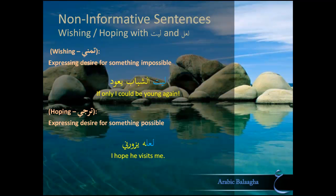Today we focus on wishes. In Arabic, this is called Tamanni. Tamanni is where you express desire for something either impossible or at least extremely unlikely. The most common word for this in Arabic is Laita. For example, you would say 'Laita al-shabaaba ya'ud' — 'I wish I could be young again,' or 'If only I could be young again,' or 'Would that I could be young again.' Notice that becoming young again is impossible.